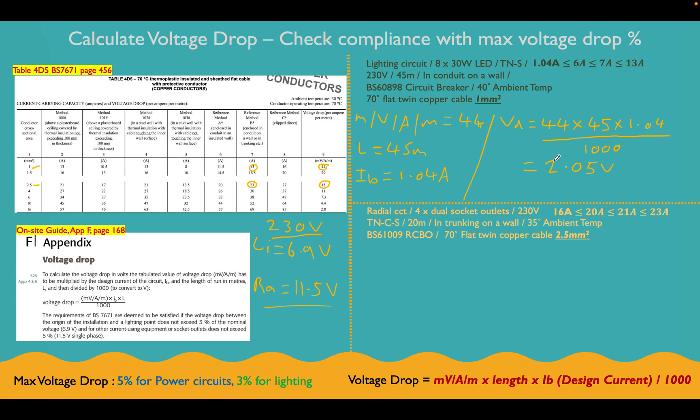Okay, so let's look now. Lighting circuit, the voltage drop for what we've designed here is 2.05 volts. Is that compliant? Yes, because it's lower than 3% of the supply voltage voltage drop. So it's less than 6.9 volts, so we're happy to say that that is a compliant circuit so far.